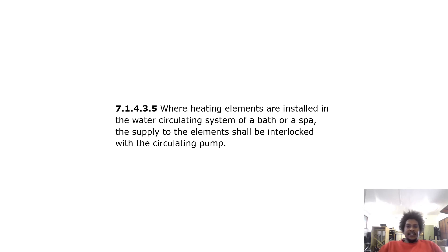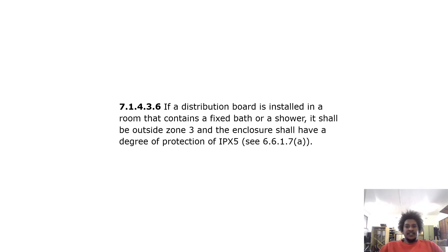Where heating elements are installed in the water circulating system of a bath or spa, the supply to the elements shall be interlocked with a circulating pump. If a distribution board is installed in a room that contains a fixed bath or a shower, it shall be outside zone 3 and the enclosure shall have a degree of protection of IPX5.